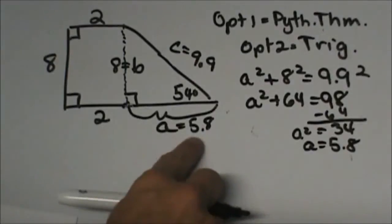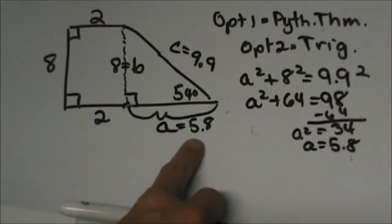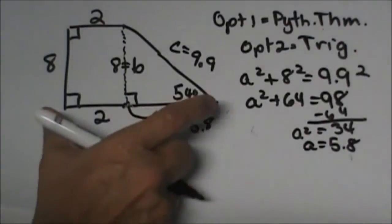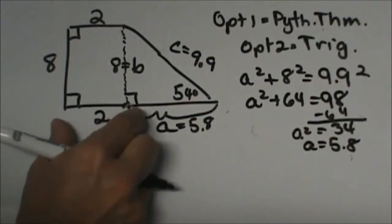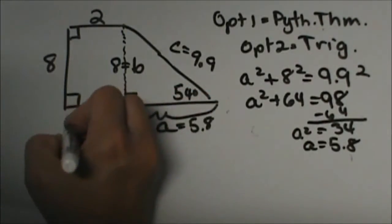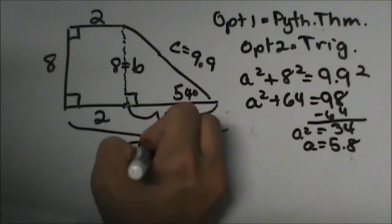So now from here, what I can do is I can now find my perimeter because I can add these two together, the 2 and the 5.8. This whole side is 7.8.